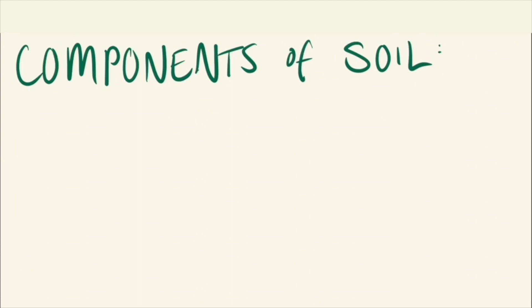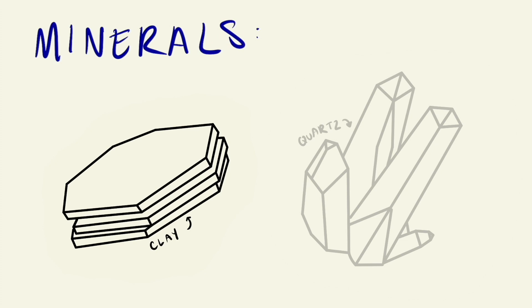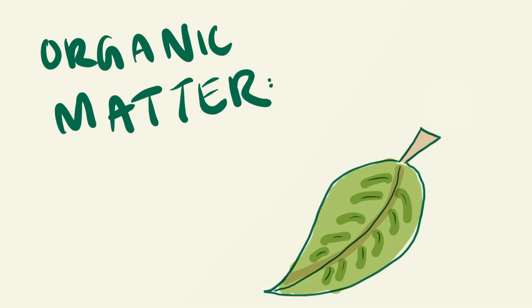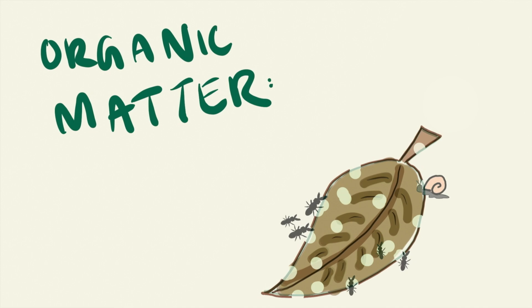You all probably know that soil is everywhere, but what exactly is it? Soil is a combination of minerals, organic matter, water, and air. Minerals, like clay and quartz, are the individual materials that make up rocks. Organic matter is anything that is or was part of an organism — from plant roots and fallen leaves to the small critters that live in or on the soil itself.